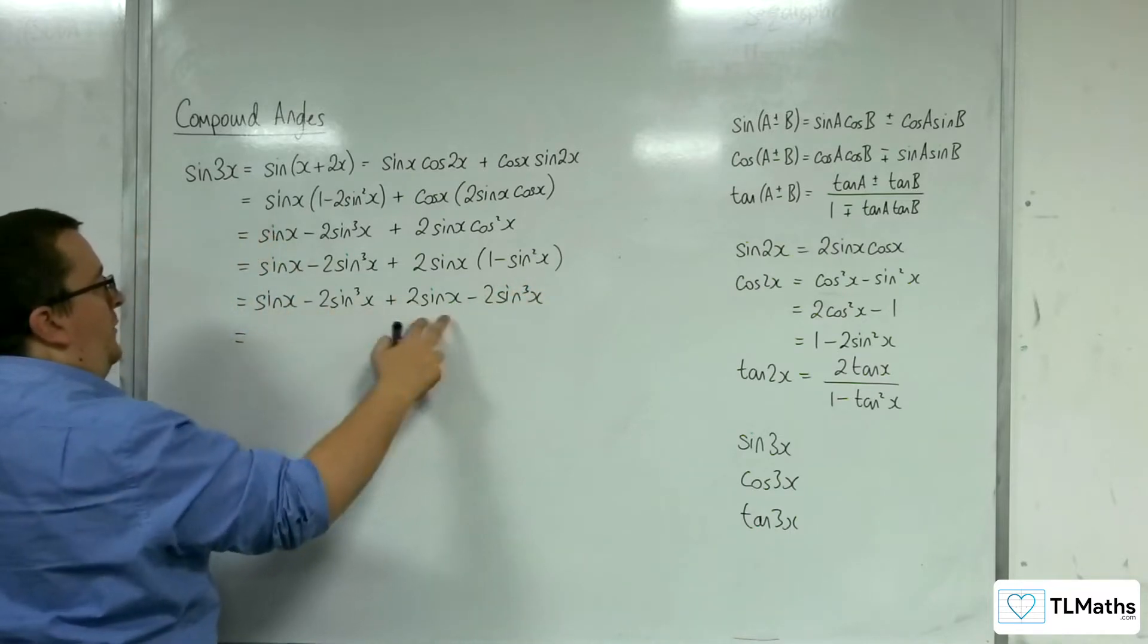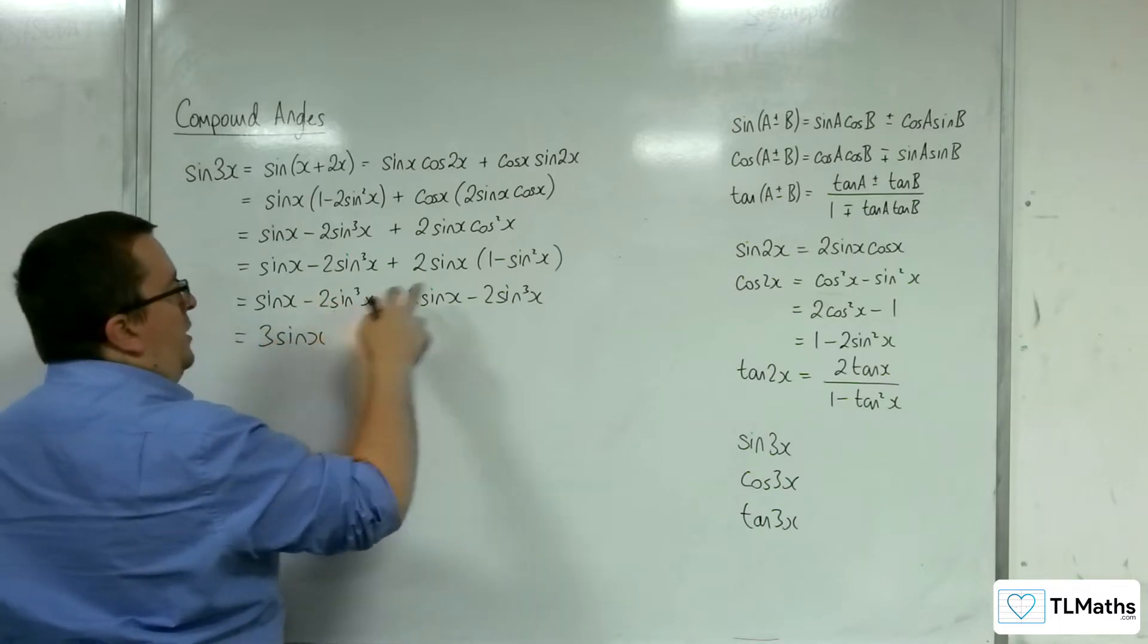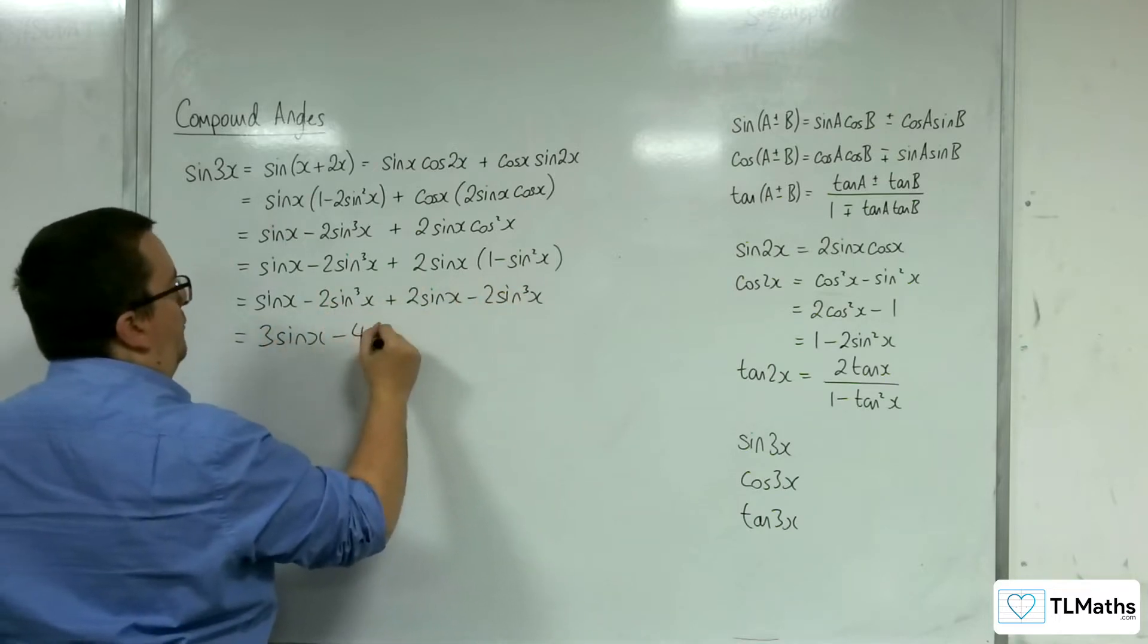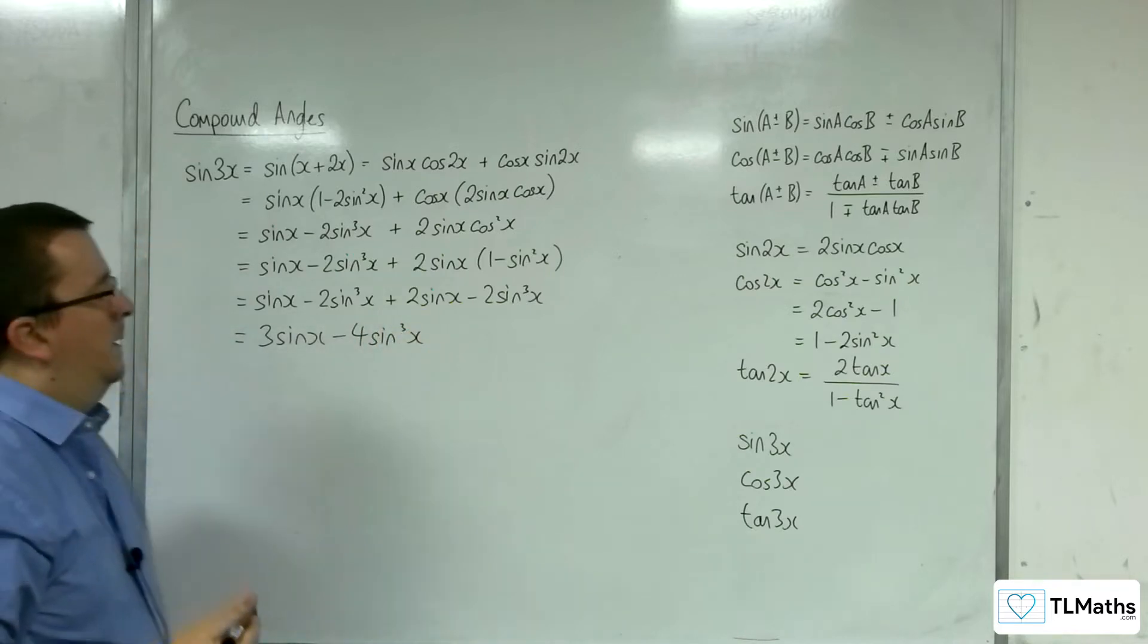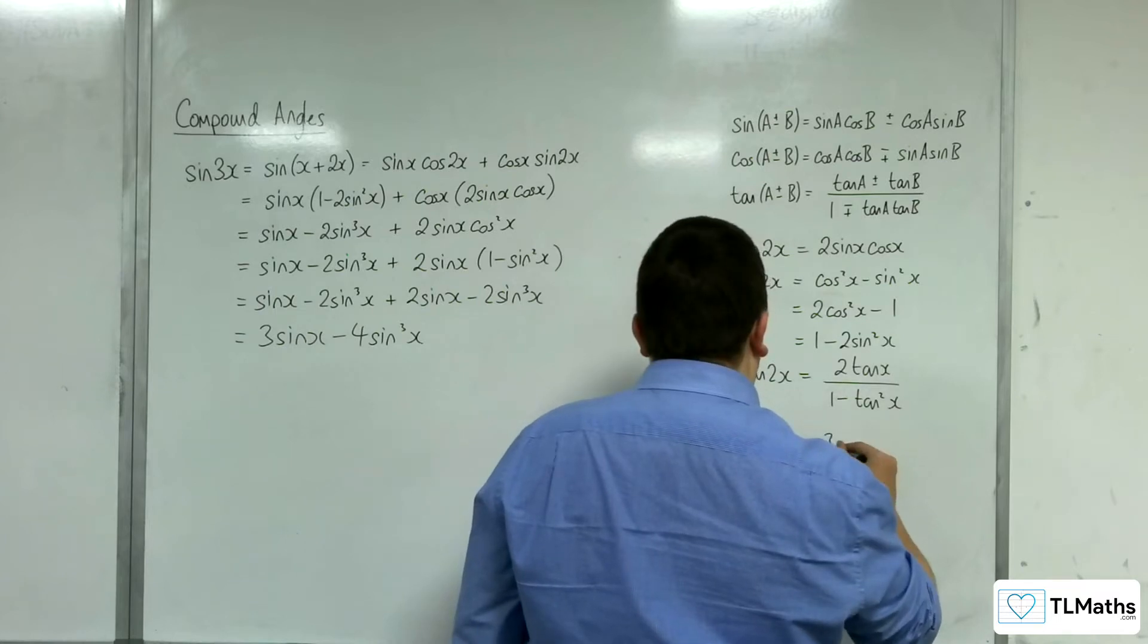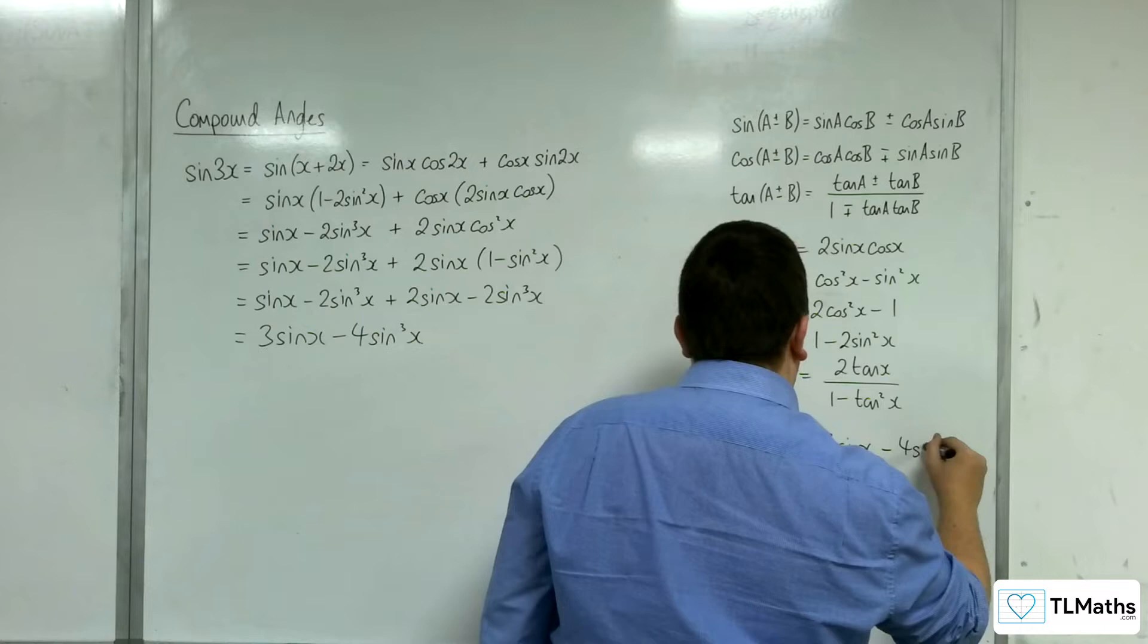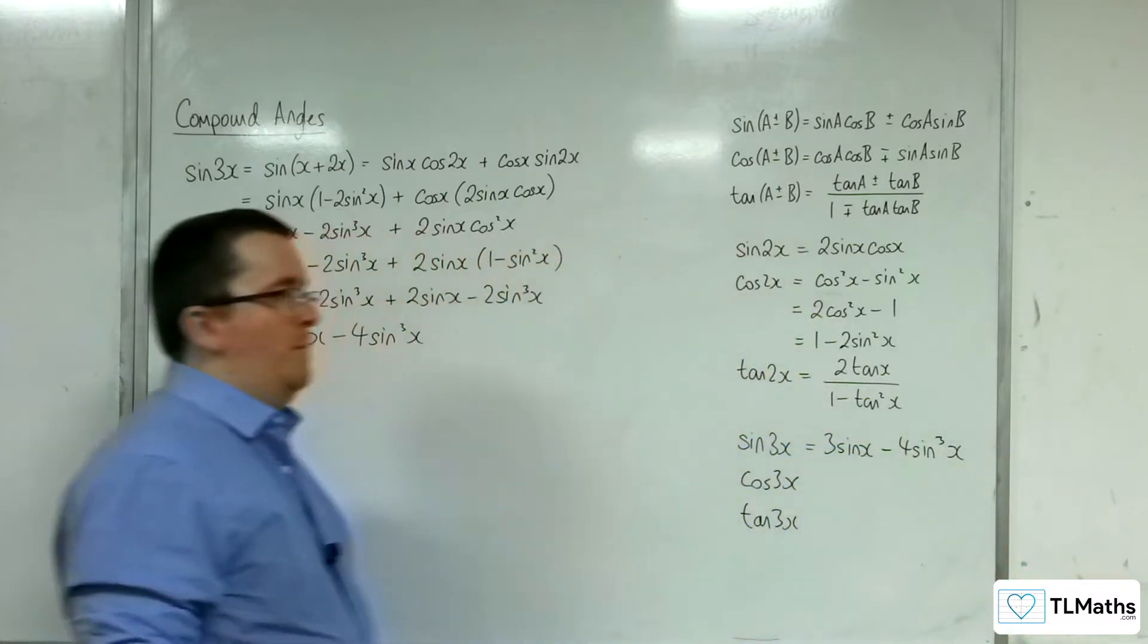So sine x take 2 sine cubed x plus 2 sine x take away 2 sine cubed x. So we've got sine x plus 2 sine x. So 3 sine x. Take away 2 sine cubed. Take away 2 sine cubed. So take away 4 sine cubed x. And so we have our first triple angle formula.